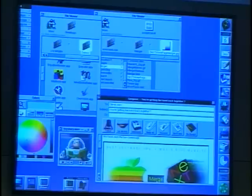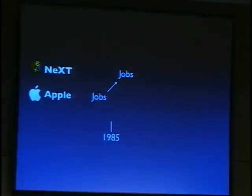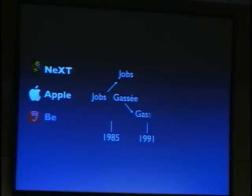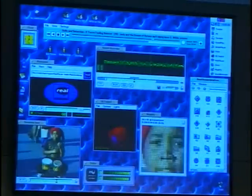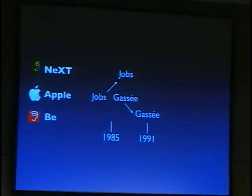Option number two was BeOS. The company Be was founded by Jobs' successor to Macintosh development, Jean-Louis Gassée. Jean-Louis Gassée had also left Apple in 1991. Here's a screenshot of BeOS, also from 1995. Apple talked to Gassée about buying BeOS, but ultimately they decided on buying NeXT.